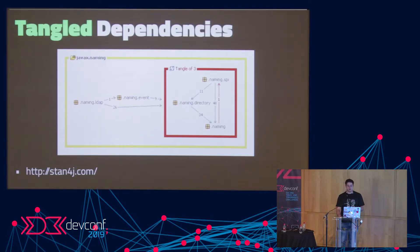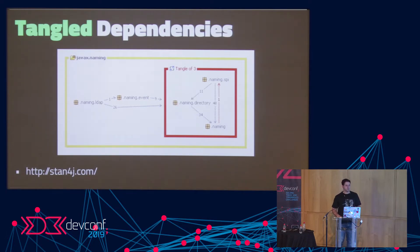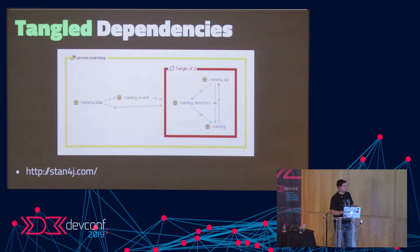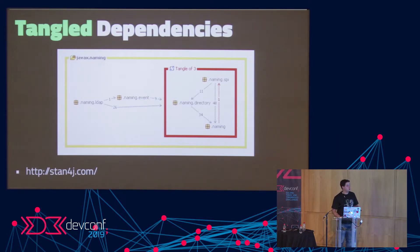An important thing when choosing your first microservice is tangled dependencies. We've identified the seams and boundaries, but the question becomes: how entangled are they? Java has a cool tool called Stan — it generates a graphical representation of your codebase showing how many calls are going between your packages or classes. Here we can see a Java package doing a lot of calls between different packages — 48 calls, 34 calls. This would be a really terrible idea for your first microservice, because splitting it out will make those class calls become very slow calls between microservices.